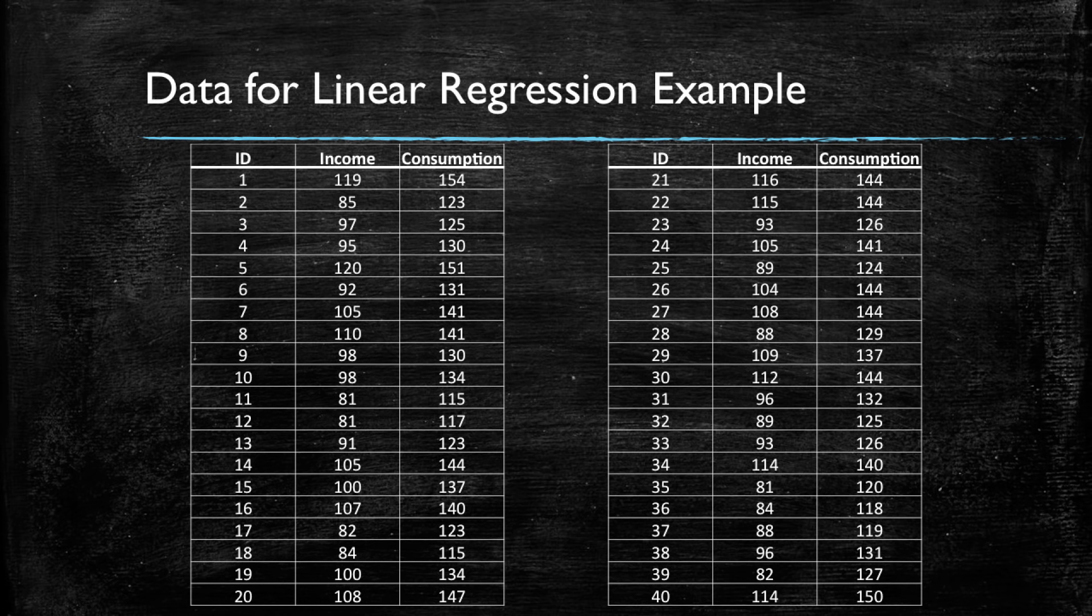Our data is going to be a series of 40 observations of 40 different families and their weekly income and consumption of a given product. So we have three columns in our data. The first one is an observation ID, which generally has no meaning whatsoever. And the other two columns are income and consumption. So how could we use these two columns in a simple linear regression model?